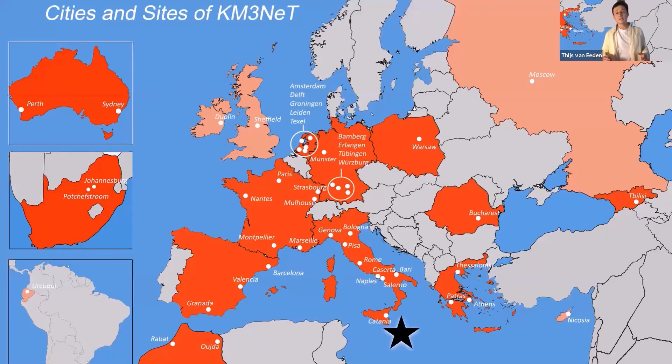Researchers and scientists from all these countries are working together to build a neutrino telescope. The name of the telescope is KM3NeT and it's being constructed at the bottom of the Mediterranean Sea near Sicily, where this black star is.